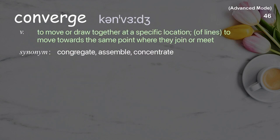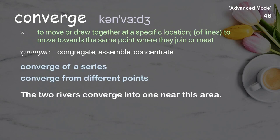Converge: to move or draw together at a specific location; of lines, to move towards the same point where they join or meet. Examples: converge of a series; converge from different points. The two rivers converge into one near this area.